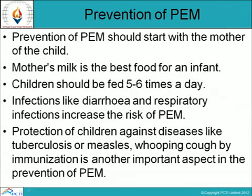Prevention of PEM should start with the mother. Mother's milk is the best food for an infant. Children should be fed five to six times a day. Infections like diarrhea and respiratory infections increase the risk of PEM. Protection of children against diseases like tuberculosis, measles, and whooping cough through immunization is another important aspect in the prevention of PEM.